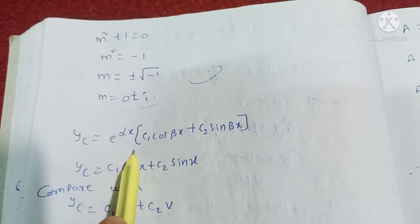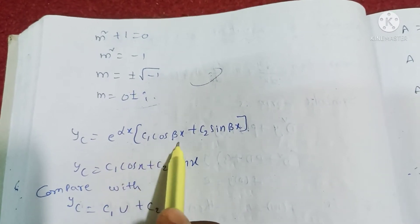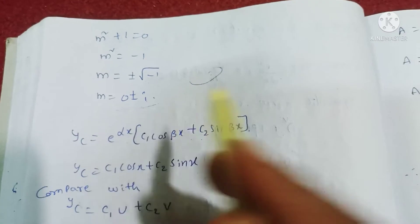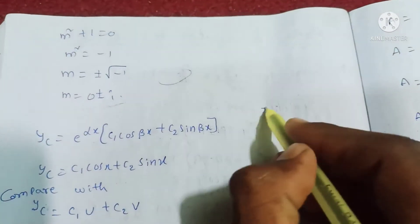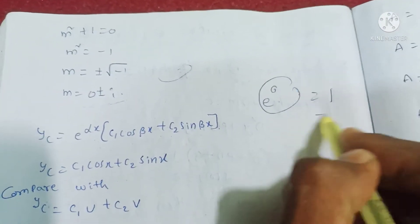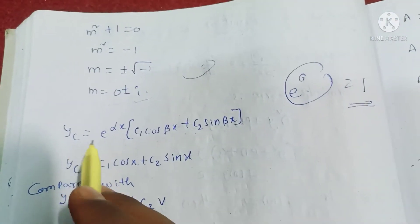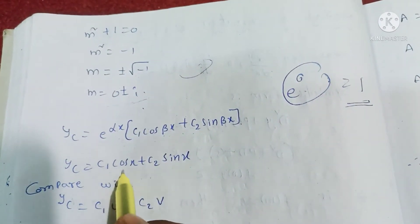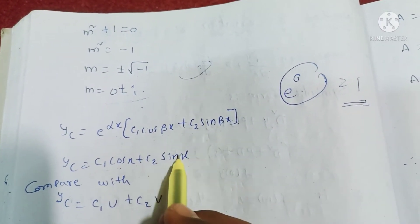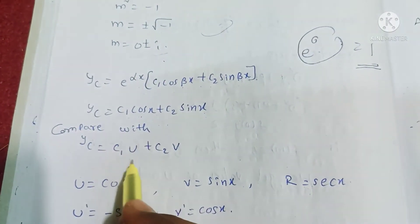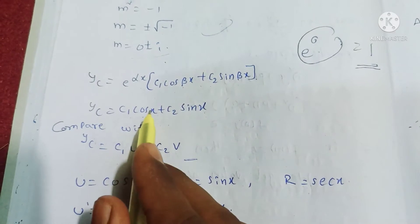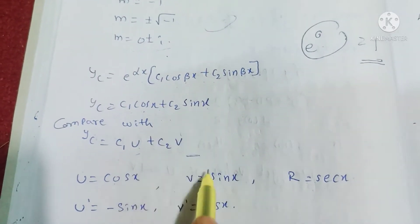For complex roots, the formula is yc = e^(αx)(c₁cos βx + c₂sin βx). Here α = 0, so e^(0) = 1. Therefore yc = c₁cos x + c₂sin x. Comparing, we get u = cos x and v = sin x.